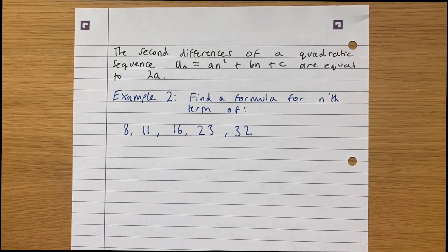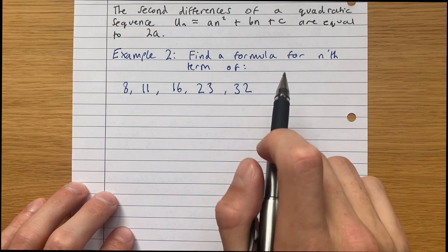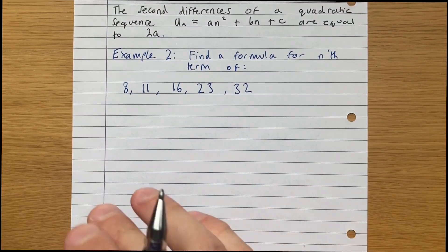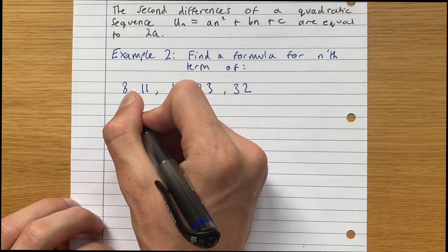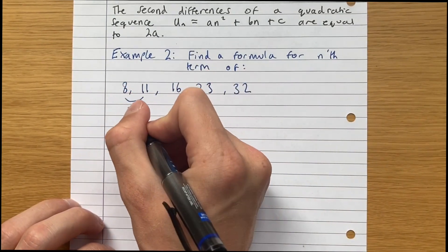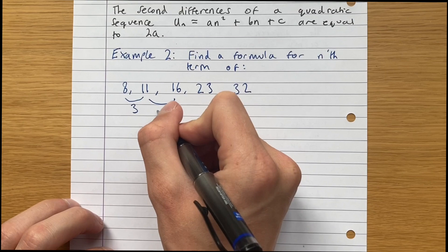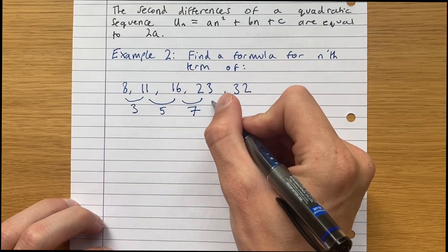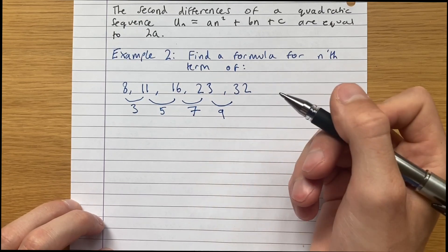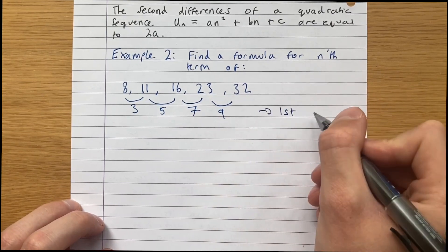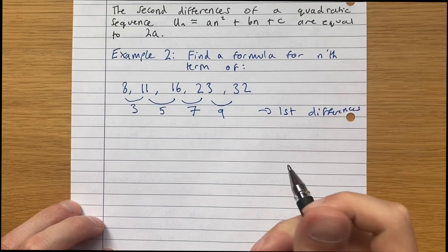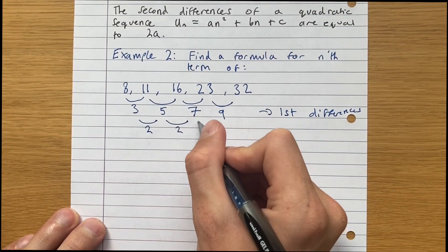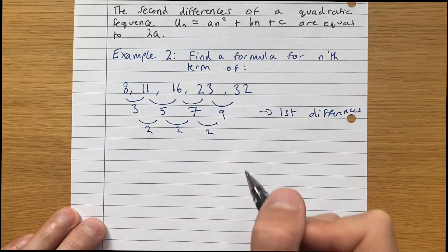We'll do an example to illustrate this now. We're finding a formula for the nth term of this sequence: 8, 11, 16, 23, 32. With questions like these, you always want to find the first and second differences with nonlinear sequences. So those are the first differences. And the second differences, it's just 2. All of these are different by 2.